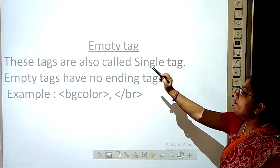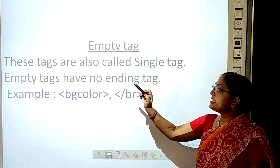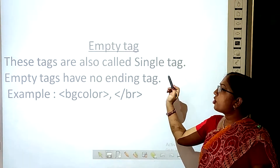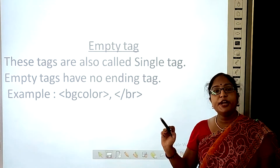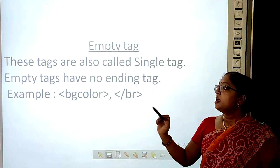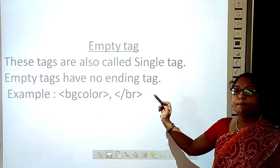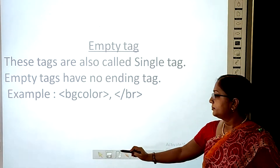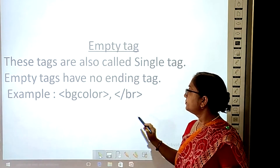The second type is empty tags. These tags are also called unpaired tags because they have no closing tag. For example, you can write the tag and place the code within it.